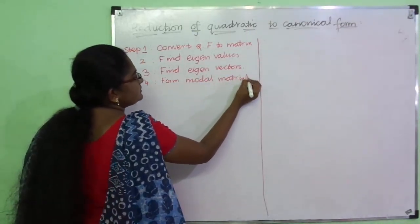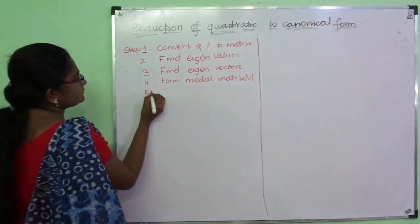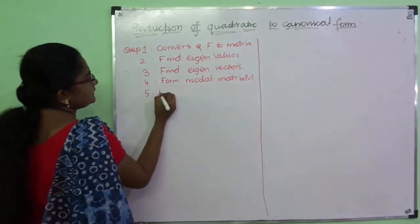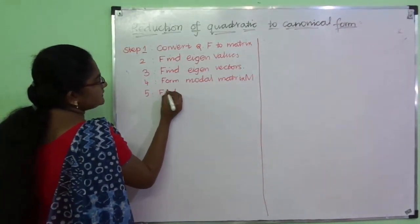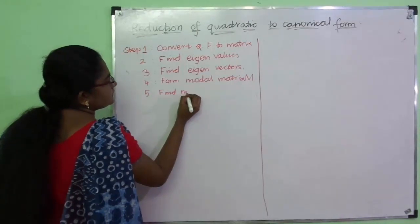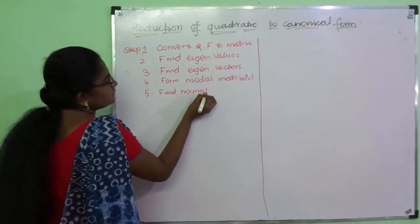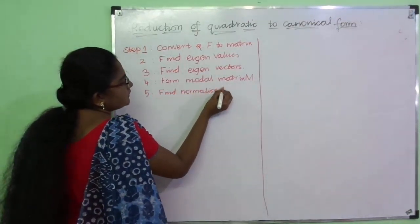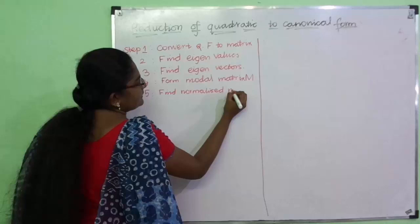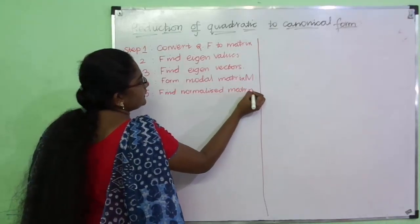After finding all these, form the modal matrix M. From this modal matrix M, find the normalized matrix N.